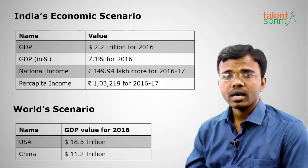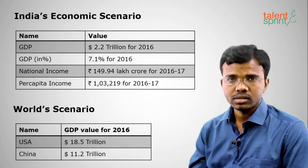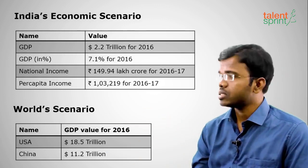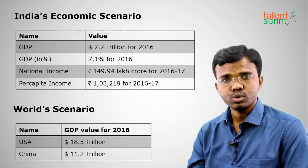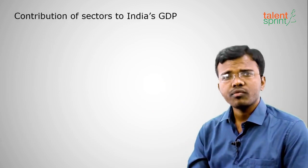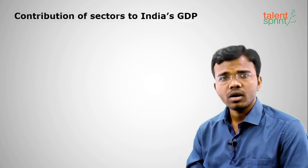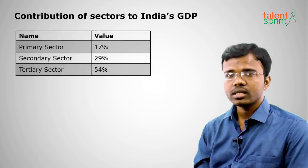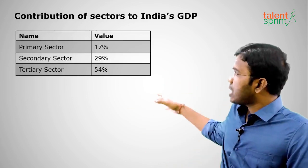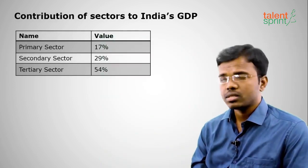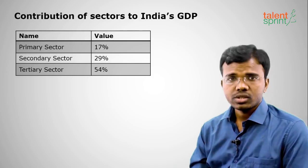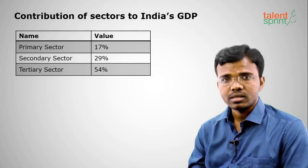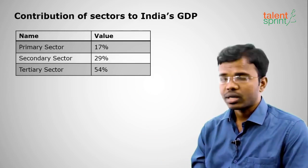In the world economic scenario for 2016, the USA has the largest GDP at 18.5 trillion US dollars, China is second at 11.2 trillion, and India is seventh at 2.2 trillion. Regarding sectoral contribution to India's GDP, the tertiary (services) sector contributes 54%, the secondary sector 29%, and the primary (agriculture) sector only 17% — the opposite of what it was in the 1950s.